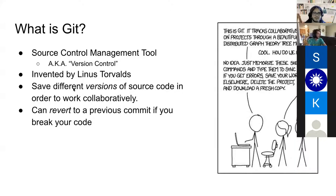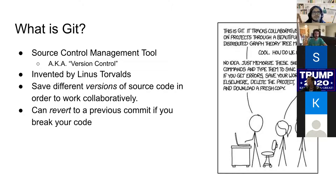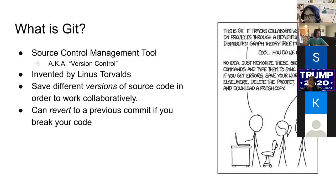You can save different versions of your source code in order to work collaboratively. That means you and your friends could all be working on a project together and you want to try something that adds to that project, but you want to do it in a way that doesn't affect their code until you're sure it works. Also, if you make changes to code that was already kind of working, you could save your state, keep working, break it, and then revert to a previous commit if your code is broken.